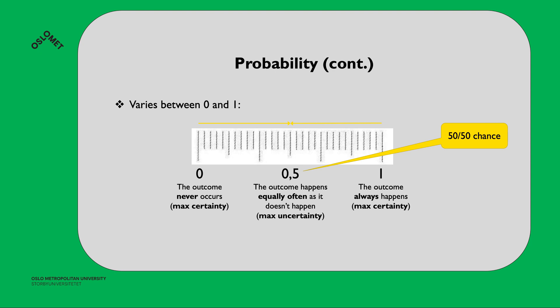Probability varies between 0 and 1. If you have 0, then the outcome never occurs - that's maximum certainty. If the outcome always happens, the probability equals 1, that's maximum certainty. Whereas 0.5, the outcome happens equally often as it doesn't happen, and that's maximum uncertainty. As you move towards 1 or towards 0, you become more certain that it will occur or will not occur. But if the chance is 50-50, then you're maximally uncertain.